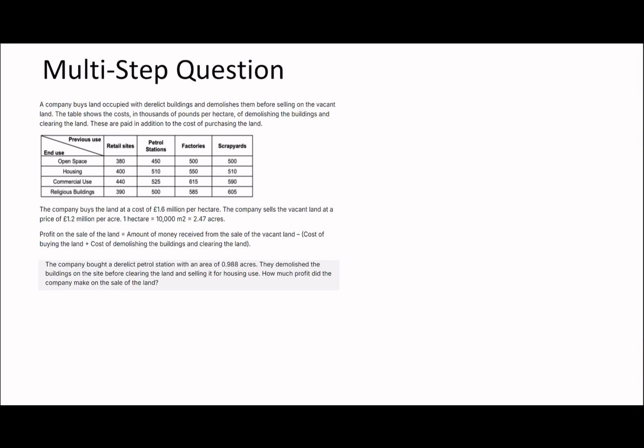Next question: a company bought a derelict petrol station with an area of 0.9988 acres, demolished the buildings before clearing the land and selling it. How much profit did they make? This is the same process again. This question set is a good reminder of what QR is about — the same question types appear again and again, so practice and understanding different question appearances is key.